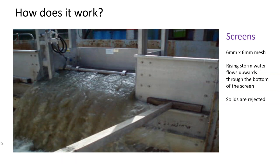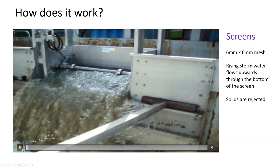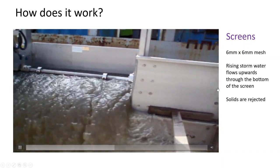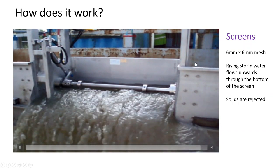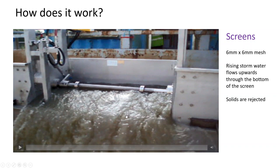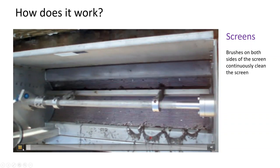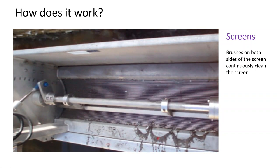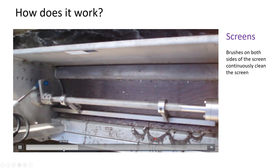Here is a video demonstrating how the screens work. The screens are a six-millimeter by six-millimeter mesh. Storm water enters at the bottom of the tank and flows upward through the bottom of the screens. Solids are rejected in the back tank, and only screened influent comes into the mixing zone with the coagulant. Automatic brushes clean the screen from top and bottom continuously during the storm whenever the unit is online.